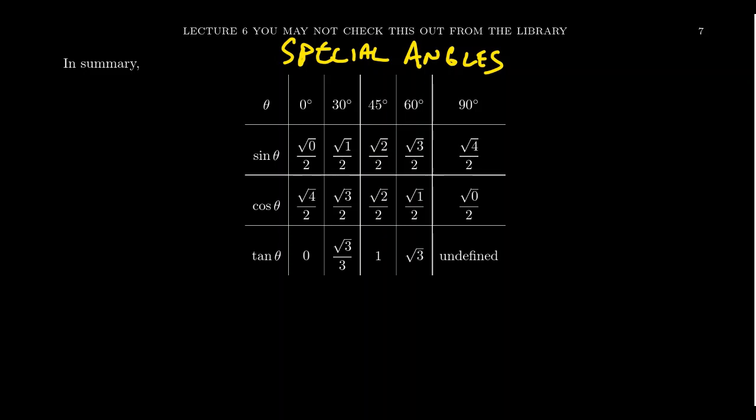All these values are correct, but this unsimplified form leads to a very simple mnemonic device. Notice we have square root of 0 over 2, square root of 1 over 2, square root of 2 over 2, square root of 3 over 2, square root of 4 over 2. There's a sequence that looks like square root of n over 2, where n ranges from 0 to 4. That can help you memorize these special angles.